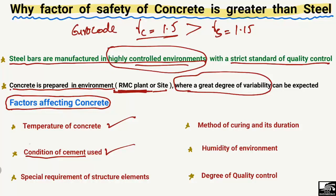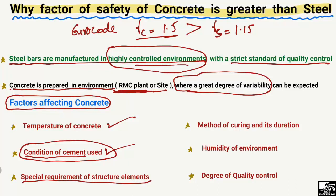The third factor is the special requirements of structural elements — if there are special requirements for structural elements, it can lead to a reduction in concrete strength, and for this purpose we take a higher factor of safety. The fourth factor is the method of curing and its duration, which can also strongly affect concrete properties, meaning the concrete strength may decrease significantly.